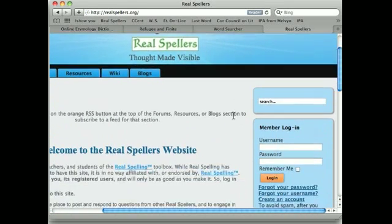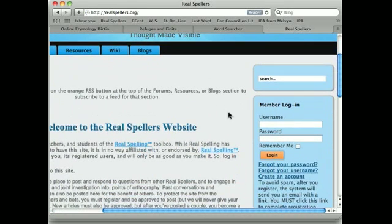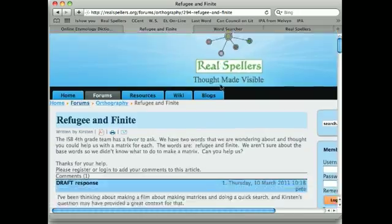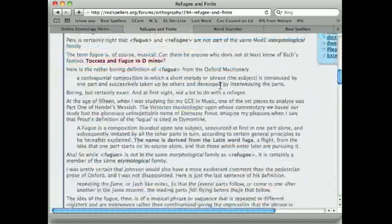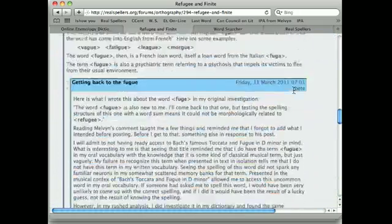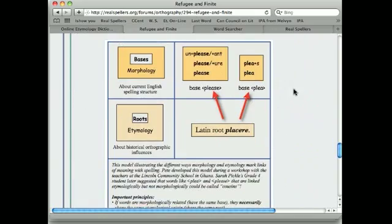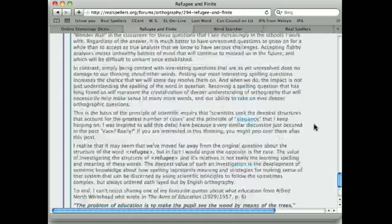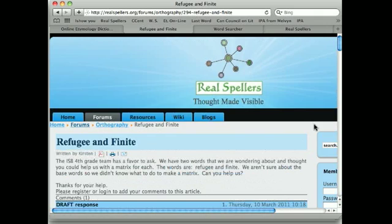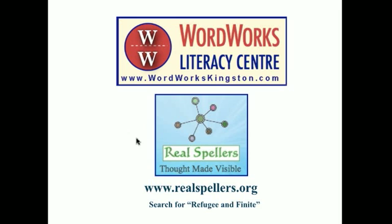The teacher at ISB emailed me the question, and I responded up on the Real Spellers site. And once you go there, you have to sign in, and then you can search for Refugee and Finite, and then you will find this nice discussion from various people. And here's a discussion of the difference between morphology and etymology. But there's lots of stuff to find there. So, I hope you find that useful.